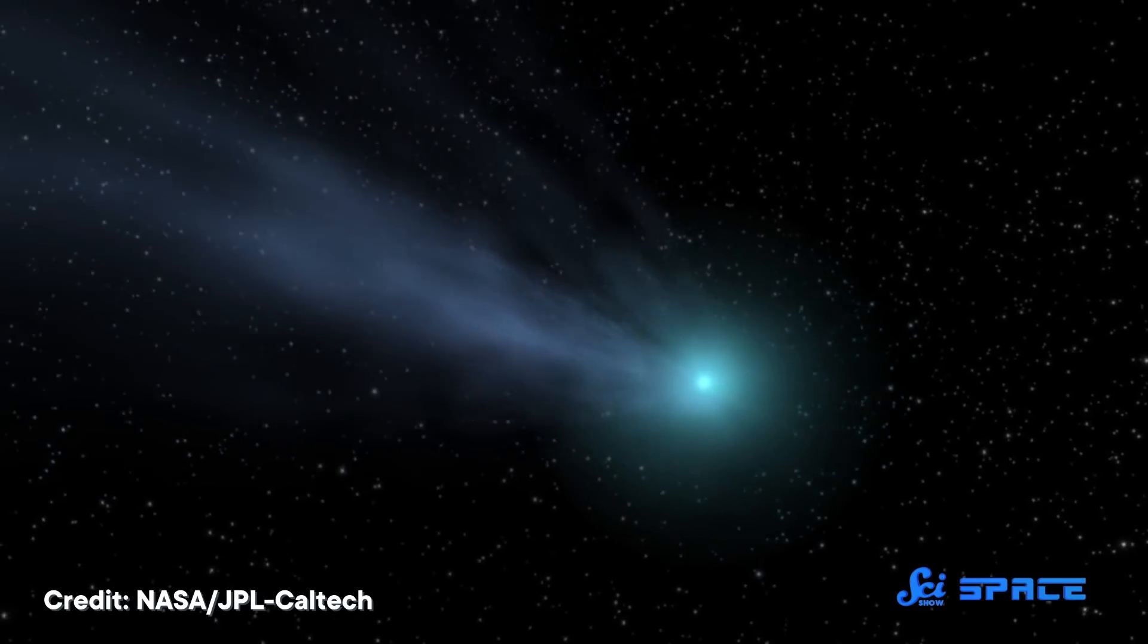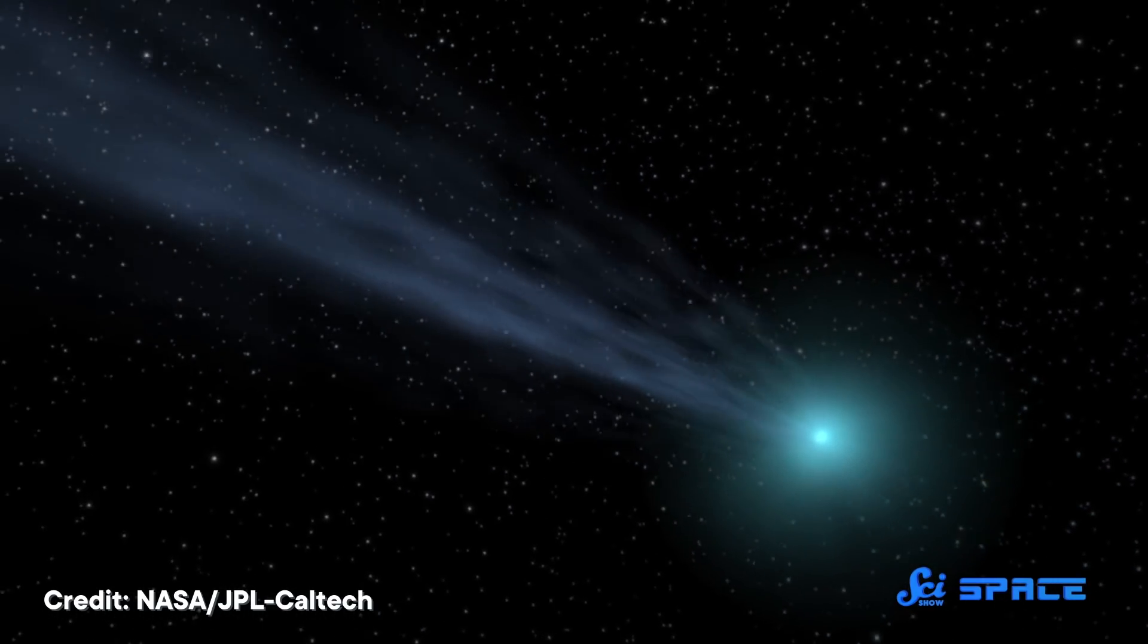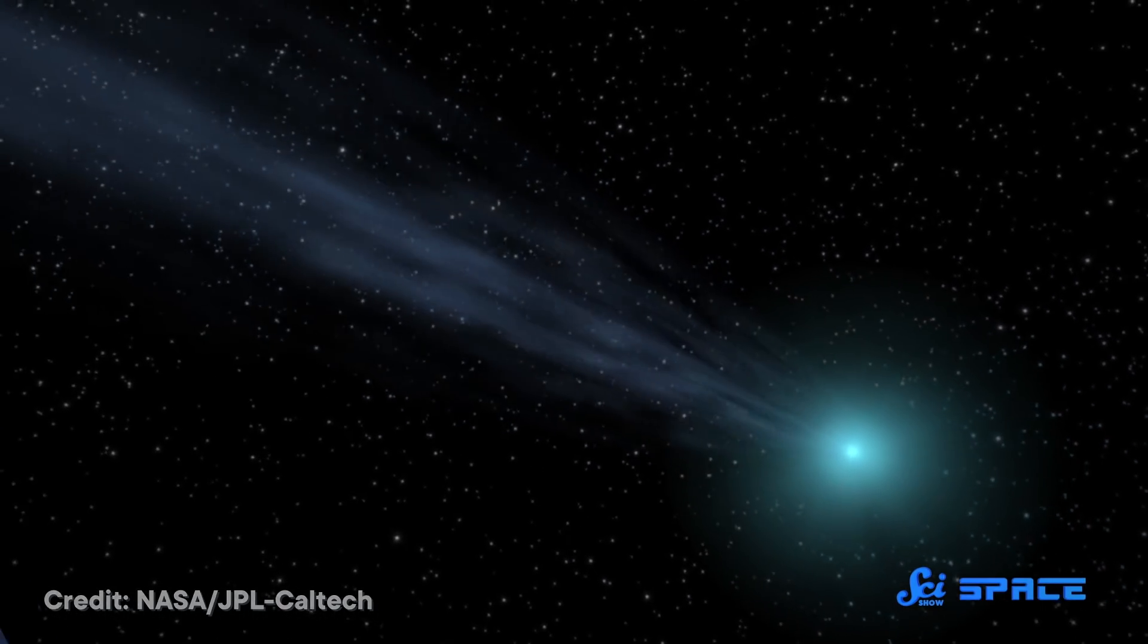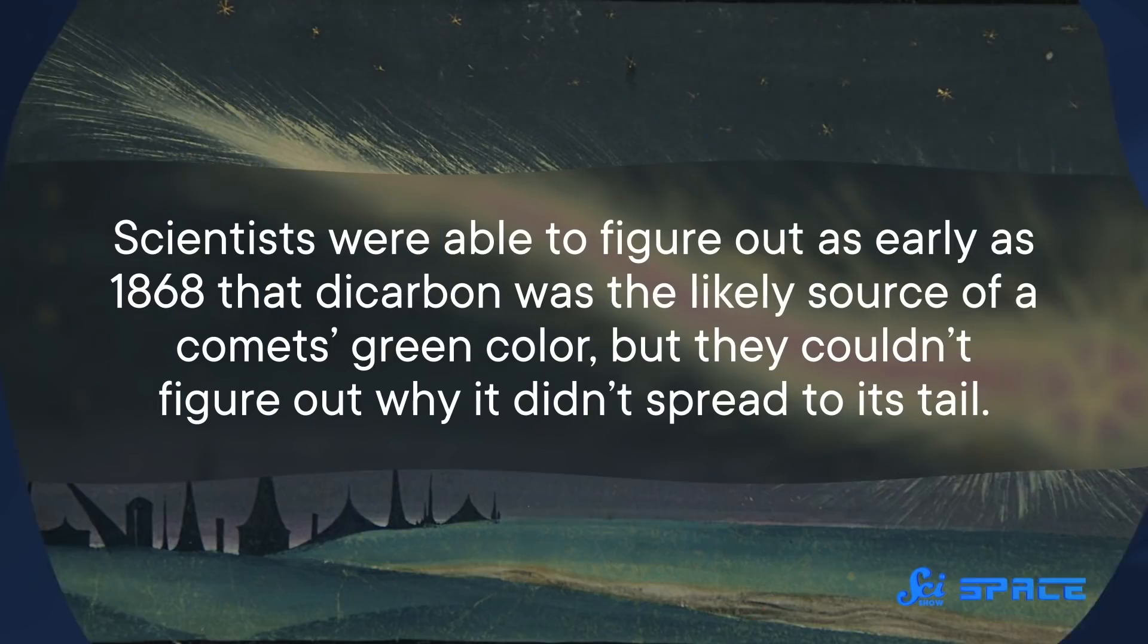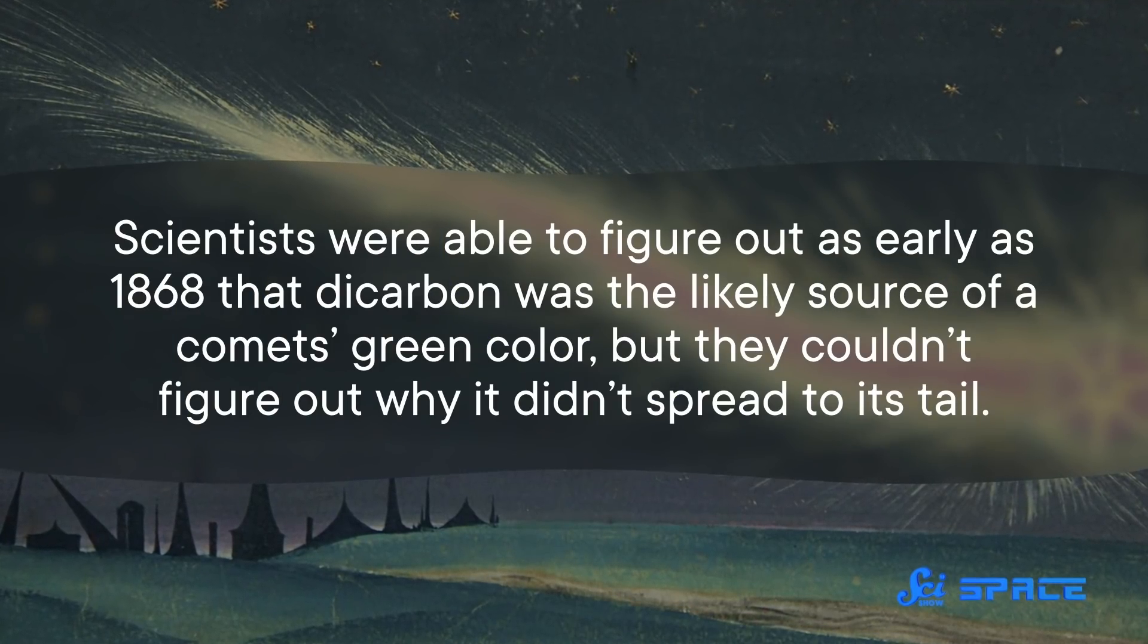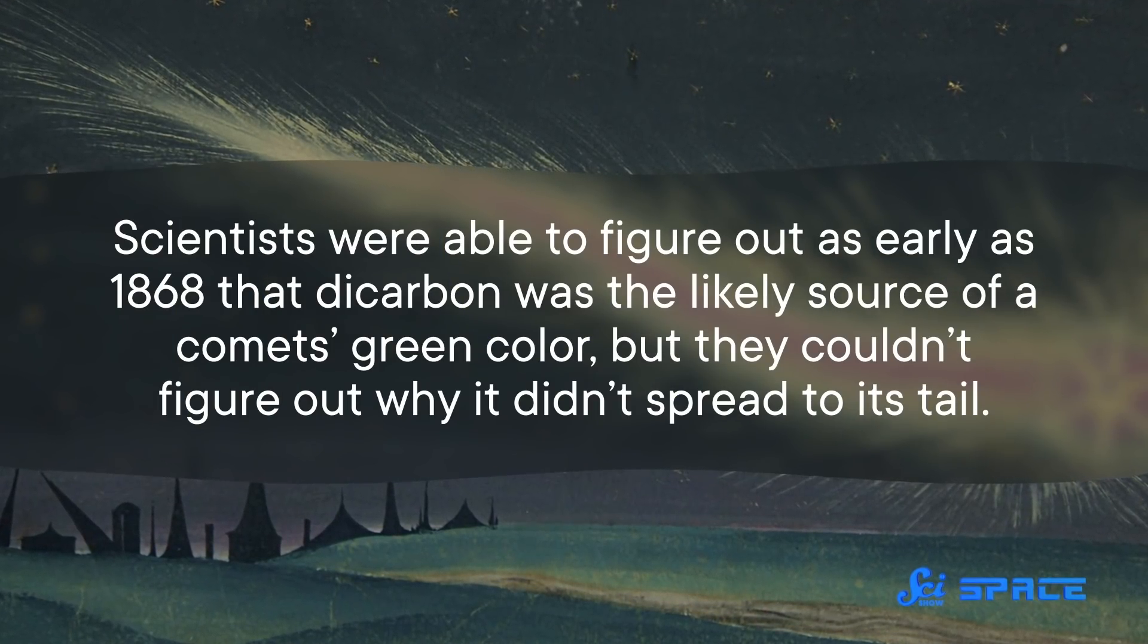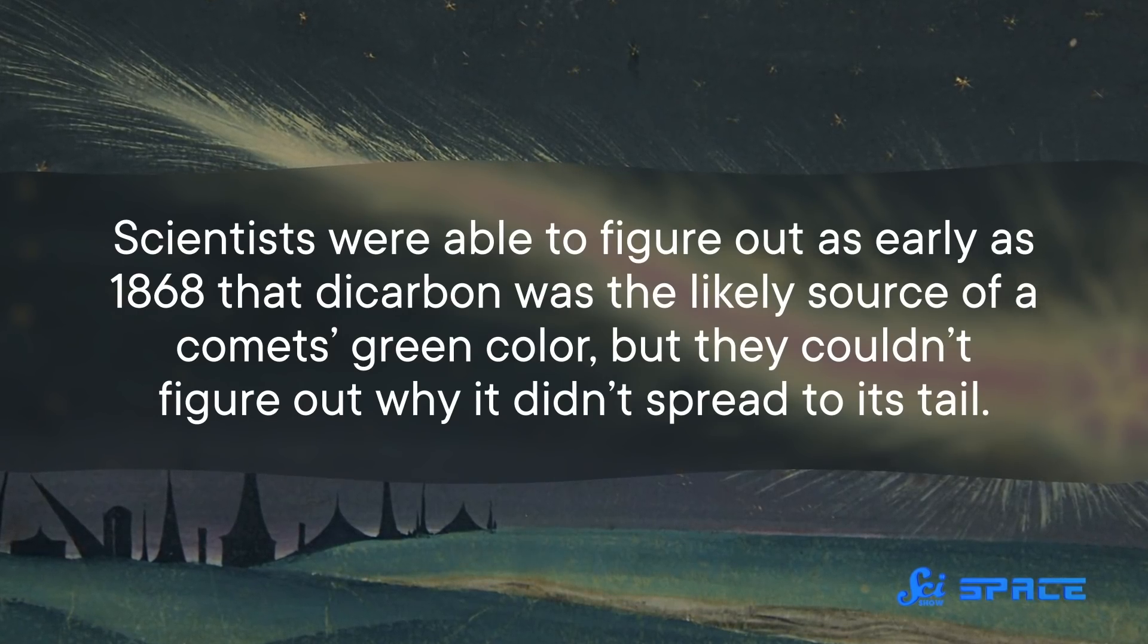The rising gas expels complex carbon-based molecules into space, where they are torn apart by the sun's ultraviolet light. As the molecules are broken down, they rearrange, creating an unusual molecule called dicarbon, which is two carbon atoms bonded to each other and nothing else. Scientists were able to figure out as early as 1868 that dicarbon was the likely source of a comet's green color. But they couldn't figure out why it didn't spread to its tail.